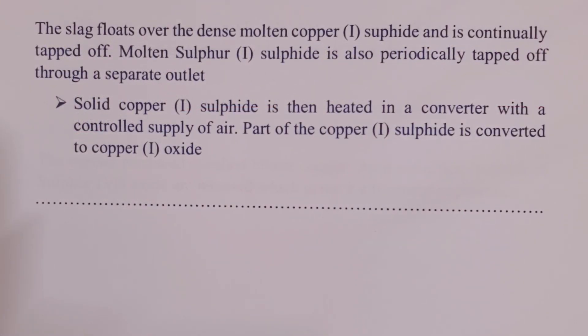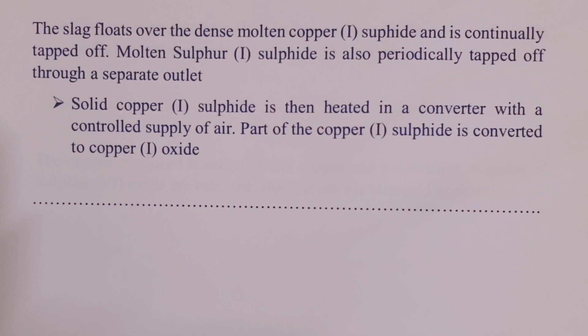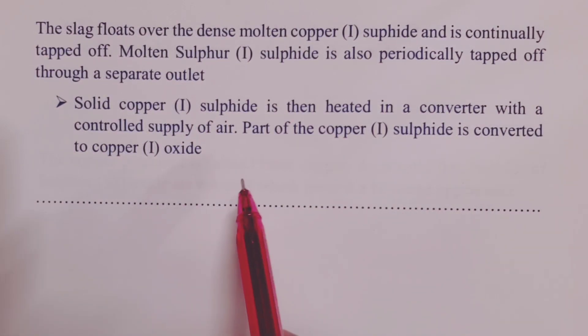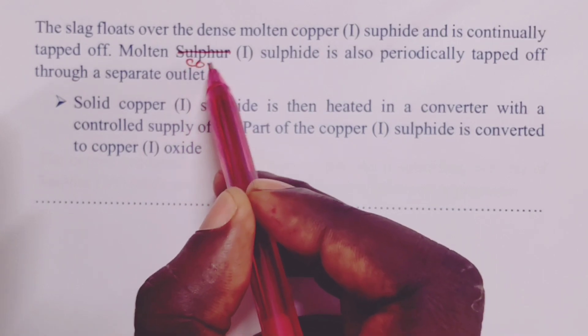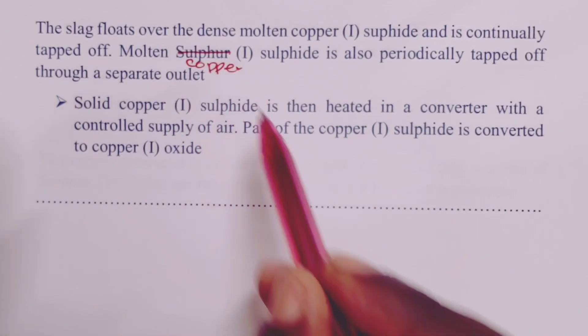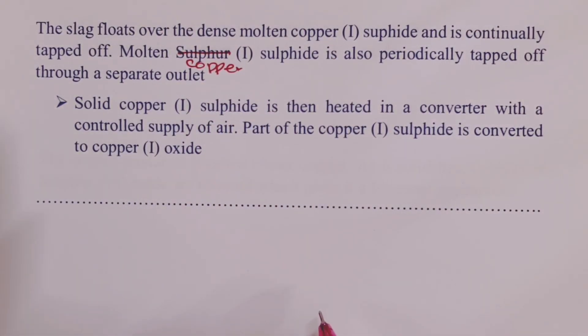Let us see how now this iron-2-silicate is removed out of the furnace. The slag will float over our dense molten copper-1-sulfide and we continually tap it off from the furnace. At the same time, molten copper-1-sulfide is also periodically tapped off through a separate outlet at the bottom of the furnace.